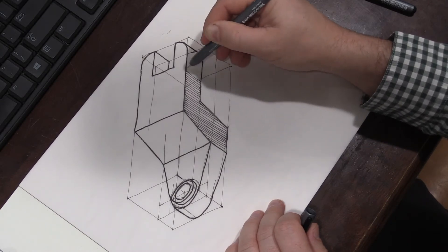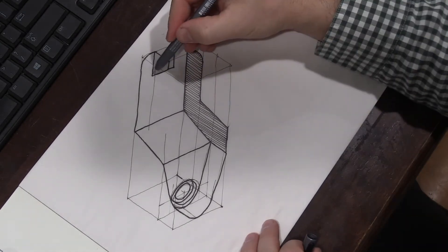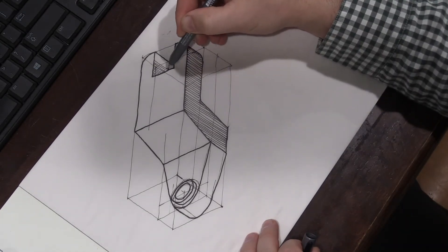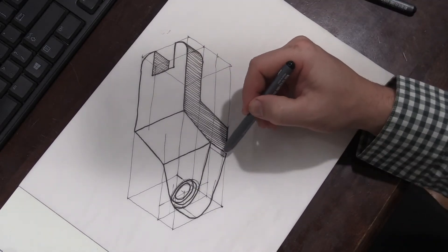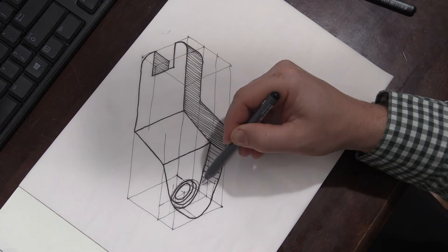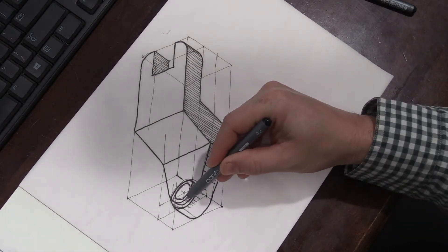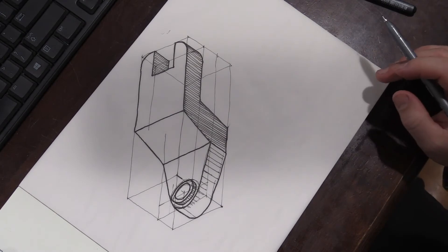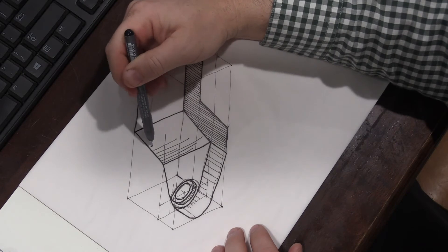I just for reference always make the top side lighter or the lightest, and usually the side facing the right will be my darker and the side facing the left will be in between the lightest and the darkest shade.